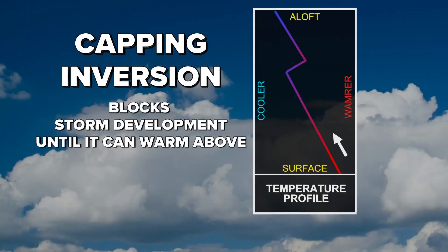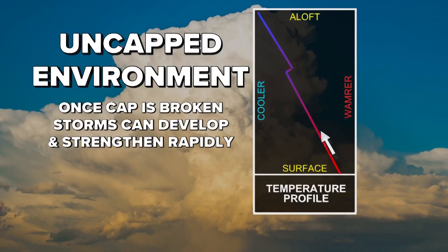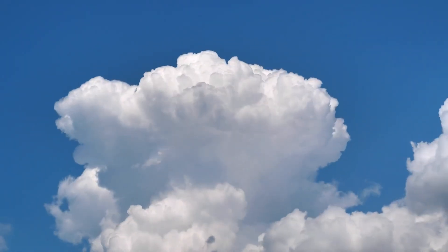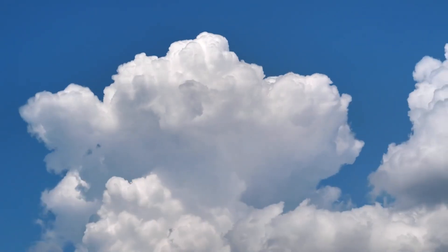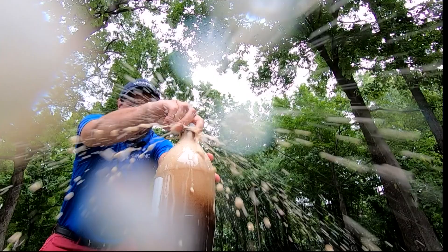To overcome the cap, temperatures need to warm up warmer than the inverted layer. Once that happens, the developing updraft is no longer capped and can freely rise upwards. This is why often during the summertime you don't see storms develop until later in the afternoon.